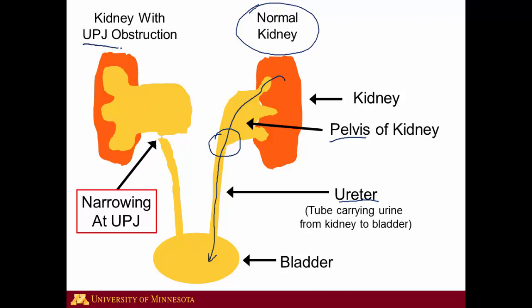If we go to the left-hand side, the kidney with UPJ obstruction is shown here. You can see that there's a narrow area at the UPJ, and that's right here. When we have a narrowing at that area, it causes a problem with urine getting from the kidney down to the bladder. Urine is produced by the kidney, it comes down, and it tries to go through the ureter, but it's not able to because it's too tight. So instead it pushes out on the renal pelvis. You can see how the renal pelvis is quite a bit larger in the kidney with UPJ obstruction than the normal kidney. The name for this is hydronephrosis, and you may see in some of your radiology reports that hydronephrosis is present — that's what they're talking about.